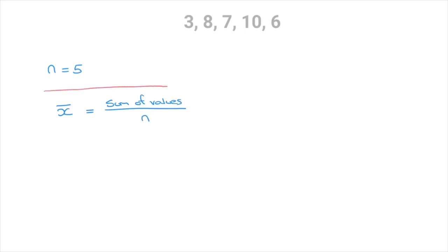And I'll go ahead and box that formula. So for our list of values here, the mean would be equal to the sum of the values, so that's 3 plus 8 plus 7 plus 10 plus 6, divided by the number of values, and we've just seen that's 5. So I'll write 5 on the denominator.